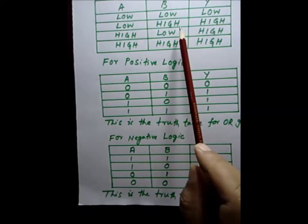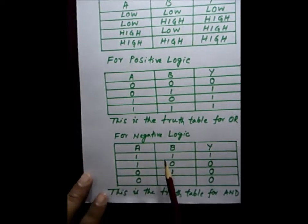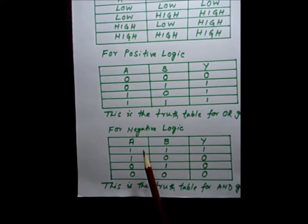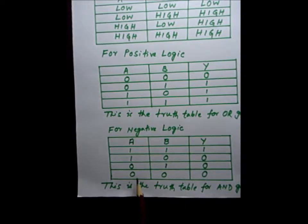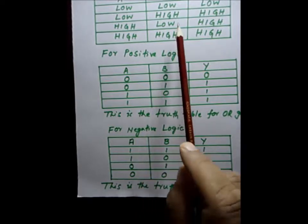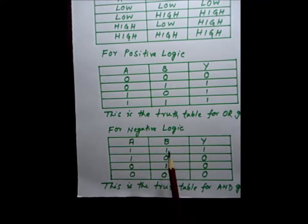In a similar way, if we apply negative logic to the above table, then for low, low, low we substitute 1, 1, 1 and for high, high, high we substitute 0, 0, 0 — that means for high we substitute 0 and for low we substitute 1. After substituting in that way, this table is converted into a truth table for an AND gate.